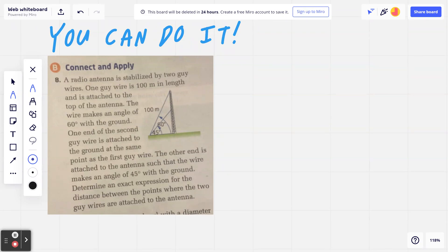The wire makes an angle of 60 degrees with the ground. One end of the second guide wire is attached to the ground at the same point as the first guide wire. The other end is attached to the antenna such that the wires make an angle of 45 degrees with the ground. Determine an exact expression for the distance between the points where the two guide wires are attached to the antenna.